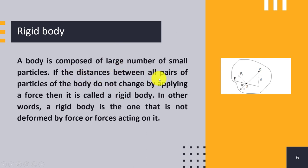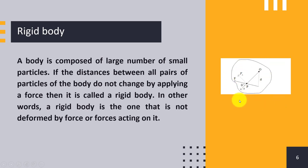The first condition is: if the distance between all pairs of particles of a body does not change by applying a force, then it is called a rigid body. The second condition is: a rigid body is one that is not deformed by the force or forces acting on it — meaning if any body does not change its shape or is not deformed or destroyed despite force being applied, we can call it a rigid body. It can be of arbitrary shape, but if it sustains its shape under an applied force, we call it a rigid body.